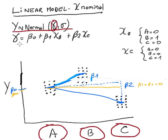Gamma now would be beta zero, plus beta one times xb, plus beta two times xc. So that's the trick — we sort of divided the x variable into two, what we call dummy variables.